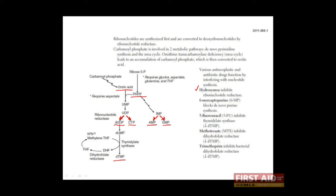Hydroxyurea will inhibit each of these steps. The next is 6-mercaptopurine, or 6-MP. 6-MP blocks de novo purine synthesis, and it acts here. The next is 5-fluorouracil, or 5-FU. 5-FU inhibits thymidylate synthase, which is right here. The next is methotrexate. Methotrexate inhibits dihydrofolate reductase, which is found here. And finally, there's something called trimethoprim, or TMP, which also inhibits dihydrofolate reductase, but in bacteria. This is actually an antibiotic.